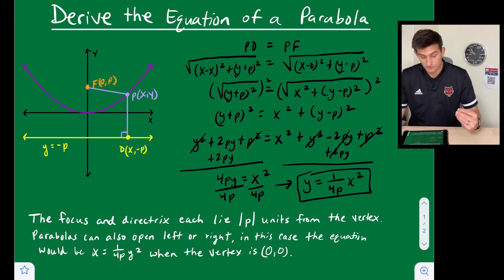So a couple things we can derive from this equation down here at the bottom in white: the focus and directrix each lie the absolute value of p units from the vertex, right? So (0, p) and then we used y = -p for our directrix equation.